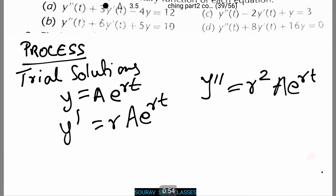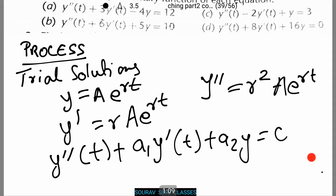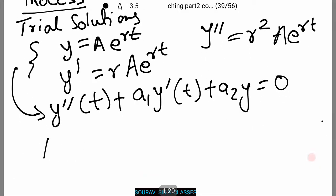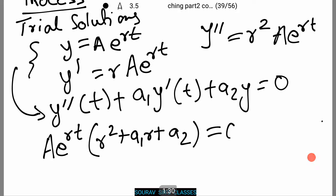Also, we consider the general solution of the reduced equation, that is the homogeneous equation, which looks like y double dash(t) plus a₁y dash(t) plus a₂y equals 0. Now we put these three values in this equation and we obtain Ae to the power rt times (r squared plus a₁r plus a₂) which equals 0.